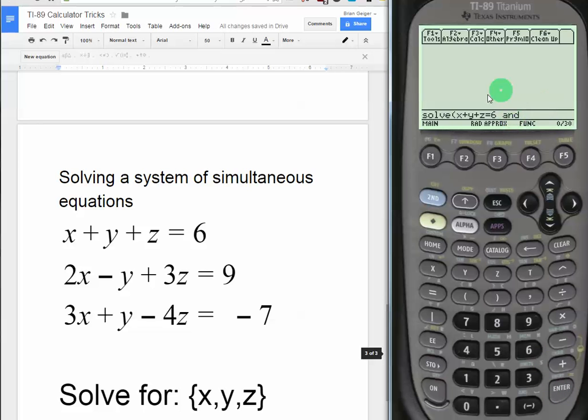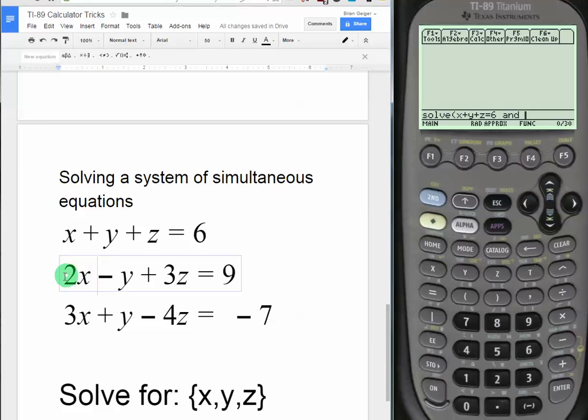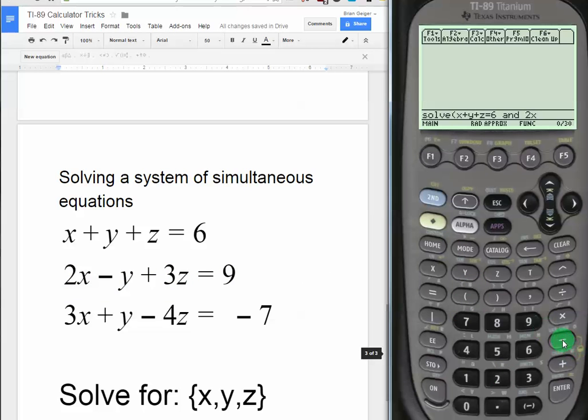Now we've entered the AND. Now we can type in our second equation, which is 2x minus y plus 3z equals 9: 2x minus y plus 3z equals 9. We'll use our AND function again.